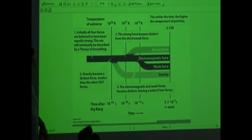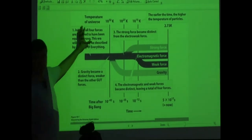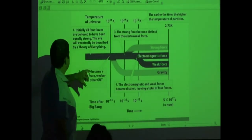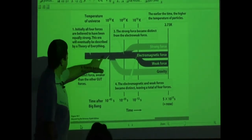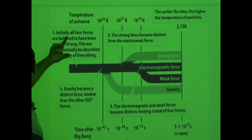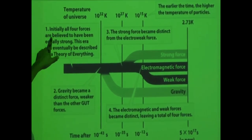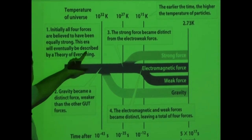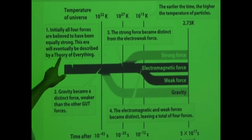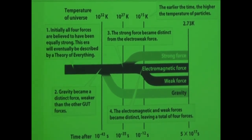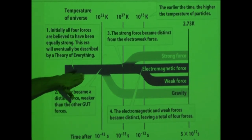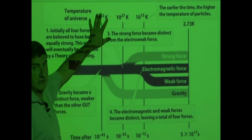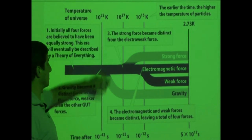We can look at this graph. It says here: this is the mother force. Initially, all four forces are believed to have been equally strong. This era will eventually be described by a theory of everything. At that time, we believe the universe is 10 to the 32 Kelvin — very, very hot.